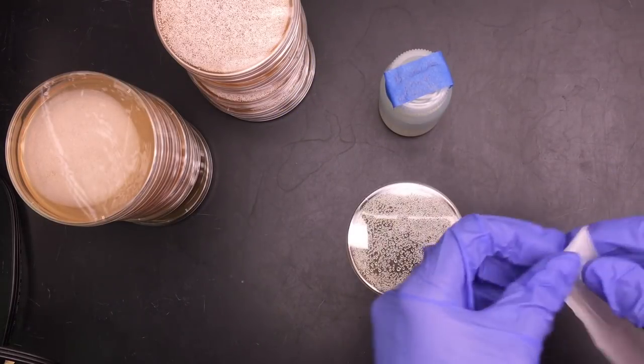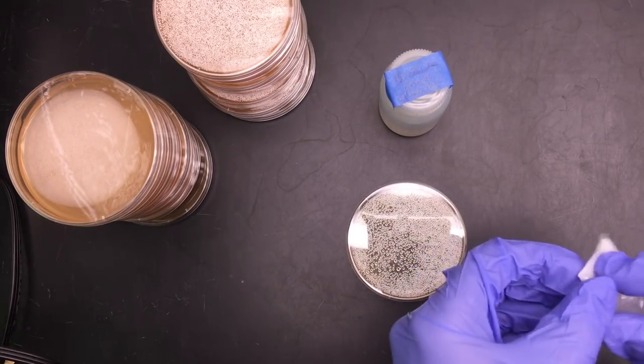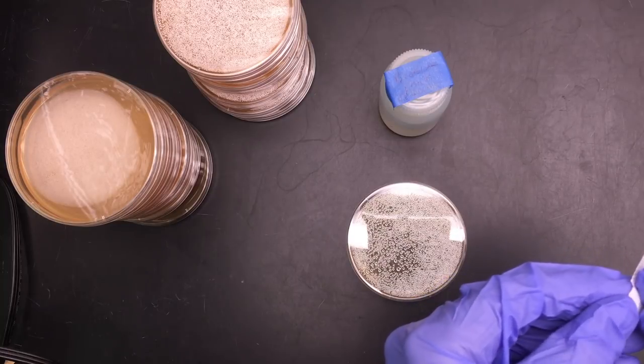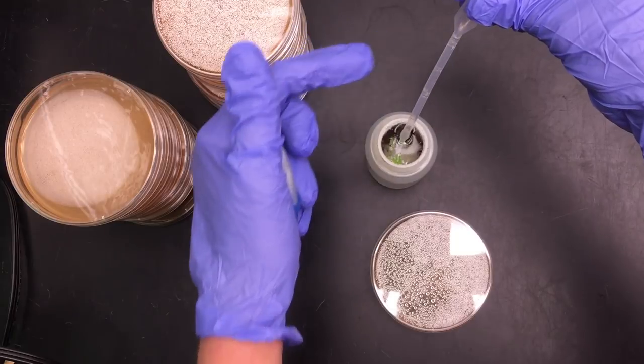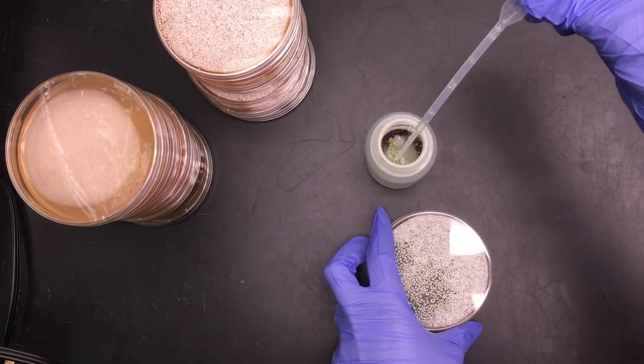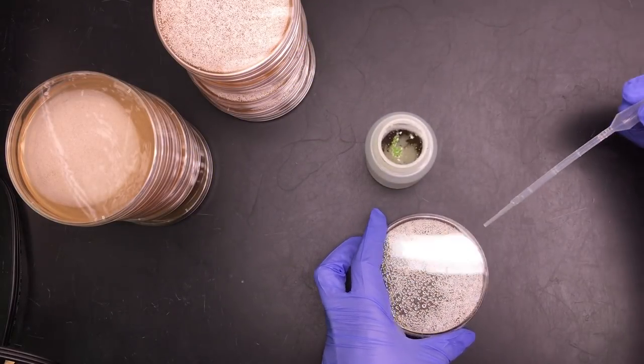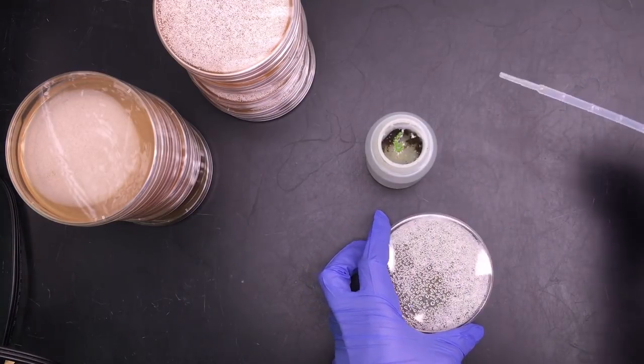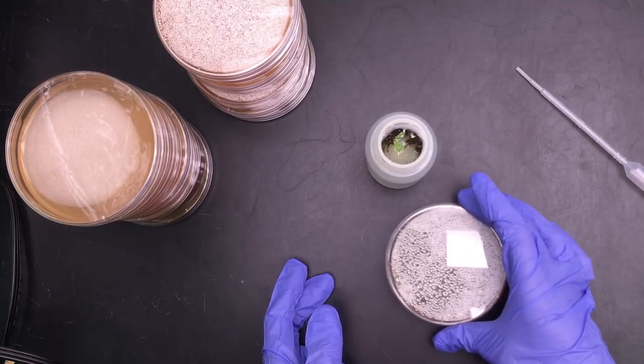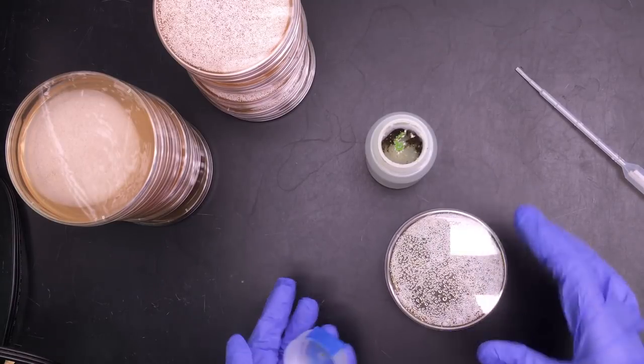So I'm going to take my sterile pipette and I'm going to take one milliliter of the water. The line here is a milliliter. And now I'm going to open my petri dish slightly and put in one milliliter of water and swirl it to cover the agar.